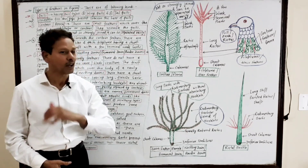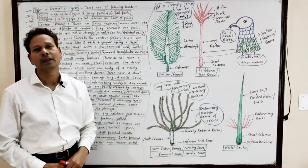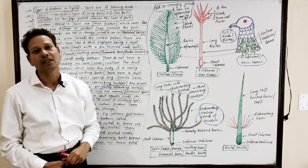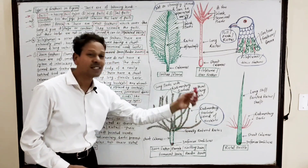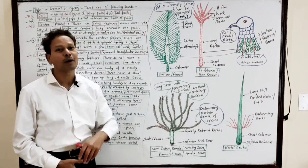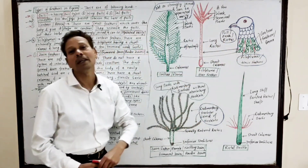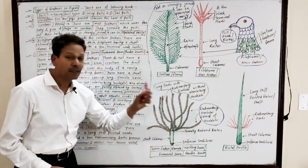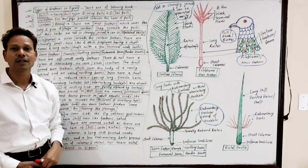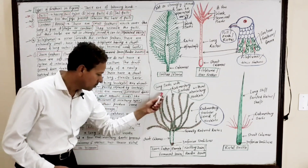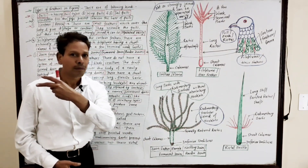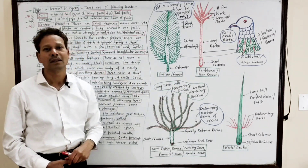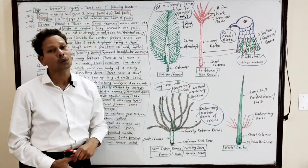The nestling down feather covers the body surface of a newly hatched bird, but is partly replaced by contour or pinna feathers. In certain birds, like aquatic birds — ducks and swans — these down feathers become permanent feathers which provide thickening to the insulating layer.